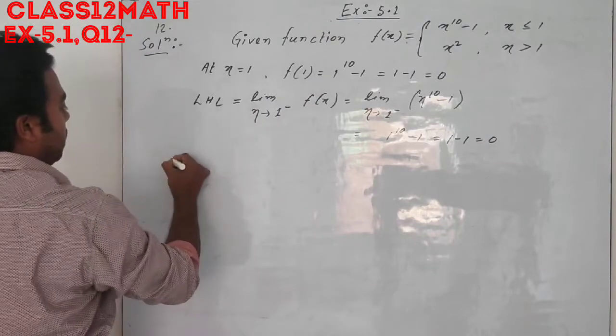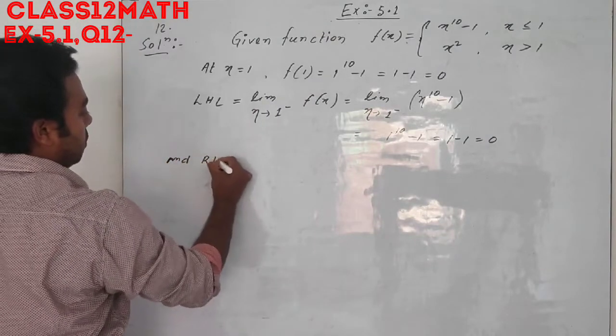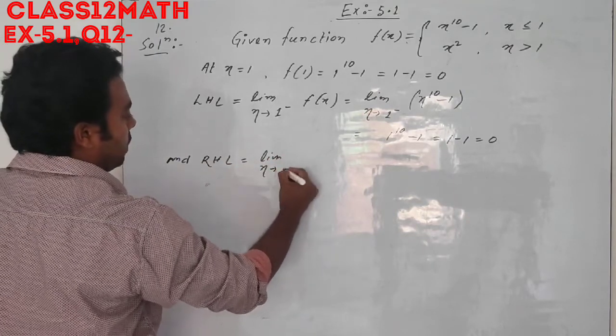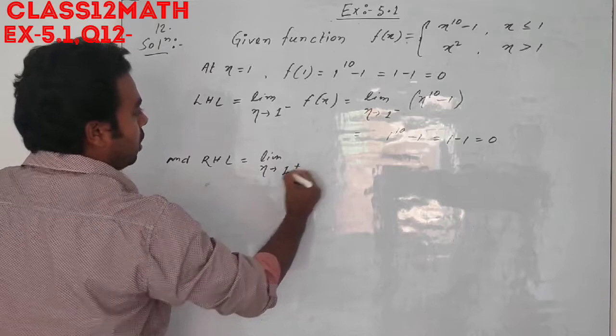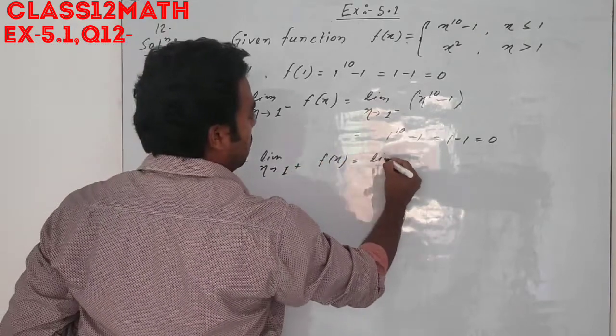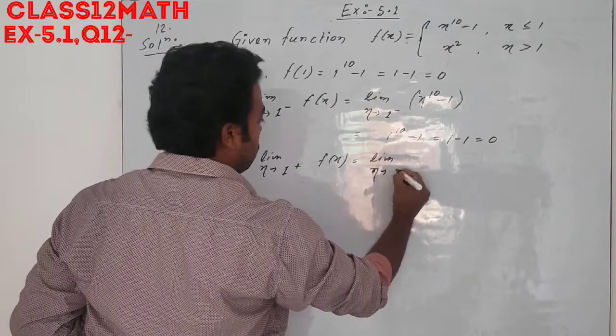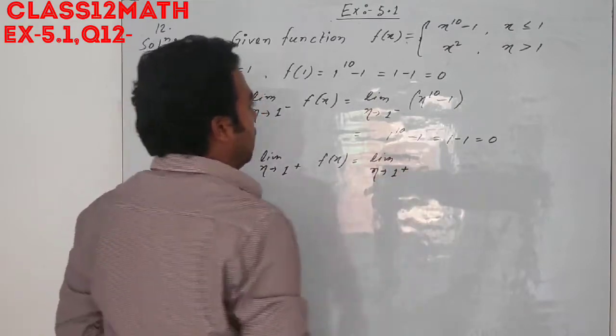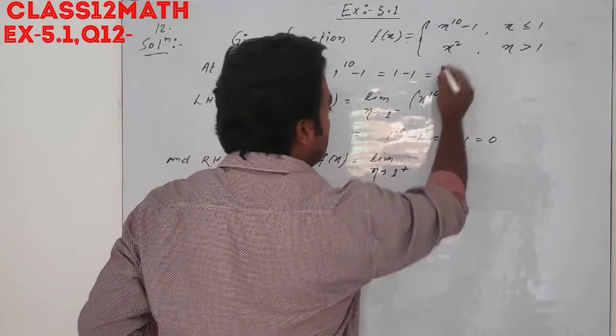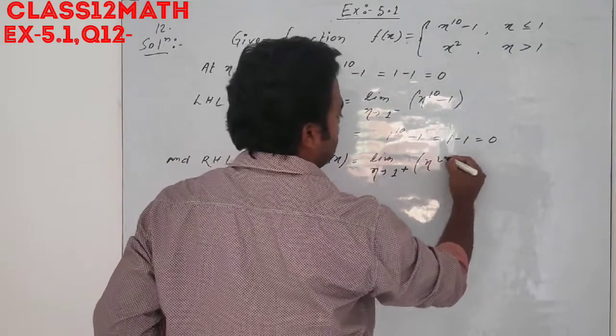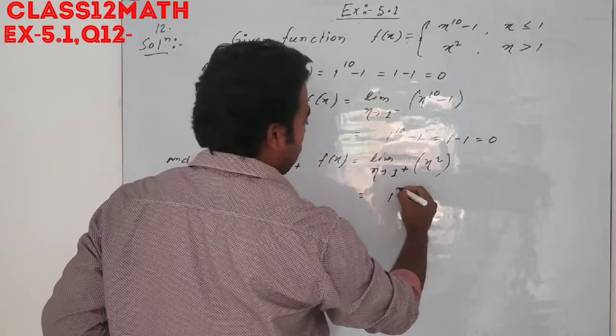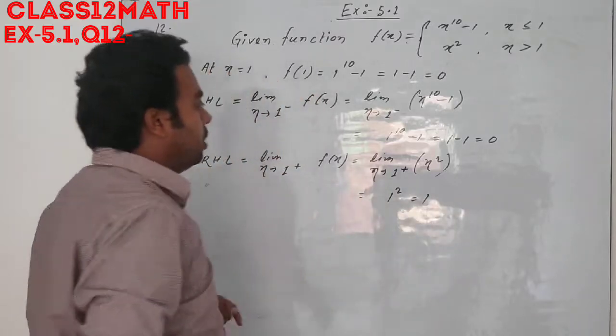Now right-hand limit: limit x tends to 1 plus f(x) equals limit x tends to 1 plus. f(x) will be, when greater than 1, x squared. So here x square, and put x equal to 1, we get 1 squared, equal to 1.